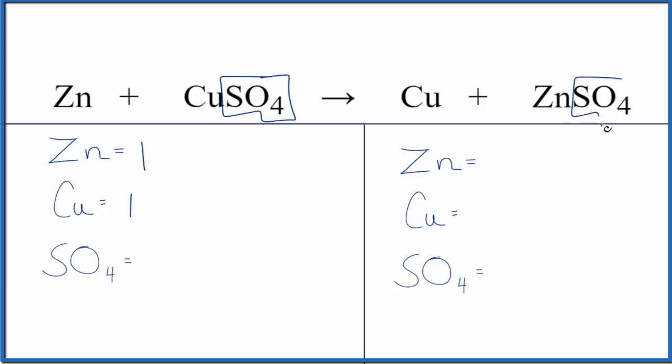We have it over here as well. So when you have a polyatomic ion like the sulfate ion on both sides, it's really helpful to count it as one thing. You get the same answer either way. It's just a lot quicker. One sulfate.